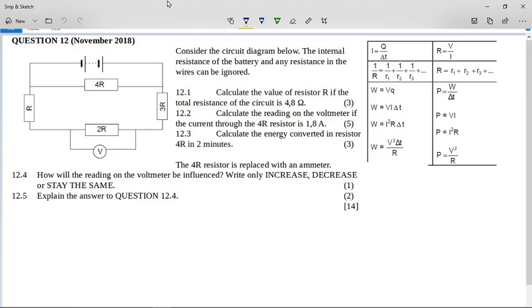Grade 12 they'll start adding in the resistance of the battery. So for now, it says to calculate the value of resistor R if the total resistance of the circuit is 4.8 ohms. So they're telling you for this whole circuit with all four of these resistors, the total resistance is 4.8 ohms. But the problem here is that this is not a straightforward circuit.